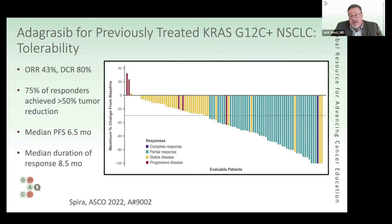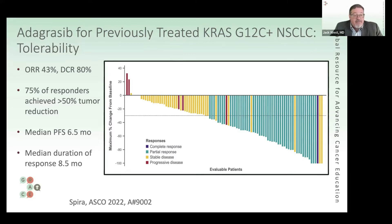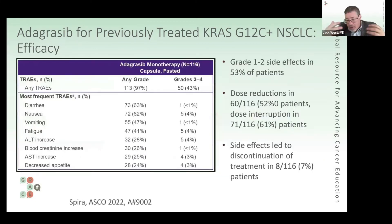DCR stands for disease control rate — that is shrinkage or at least not growing. Four out of five patients had their cancer shrink or not grow. The median time before the cancer progressed was about six and a half months, and the duration of response was a median of eight and a half months — so half had progressed before that point, half after.